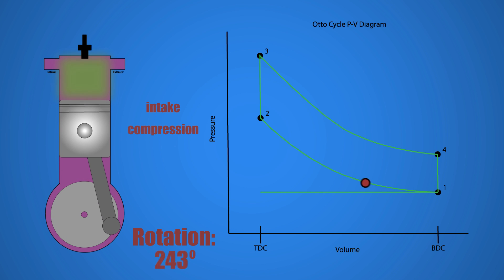In a four cycle piston engine the crankshaft rotates two full rotations during a complete thermodynamic cycle as shown.